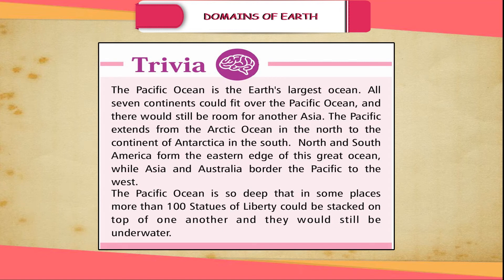Trivia: The Pacific Ocean is the Earth's largest ocean. All seven continents could fit over the Pacific Ocean and there would still be room for another Asia. The Pacific extends from the Arctic Ocean in the north to the continent of Antarctica in the south. North and South America form the eastern edge of this great ocean, while Asia and Australia border the Pacific to the west. The Pacific Ocean is so deep that in some places more than 100 Statues of Liberty could be stacked on top of one another and they would still be underwater.